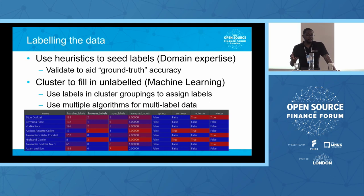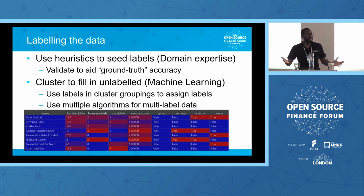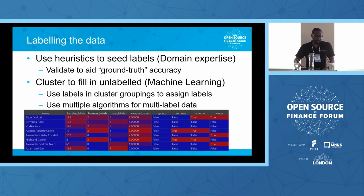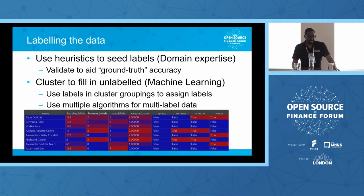That's important because you as the domain expert would come out and say whether this makes sense. You know your data and understand what you want to relate. When you take the time to build that validation around the heuristics, you are actually establishing ground truth — and it's so important to establish that ground truth because everything after that is based on what the data tells you.